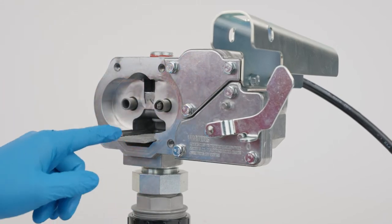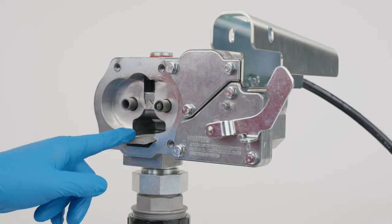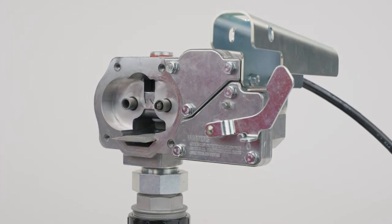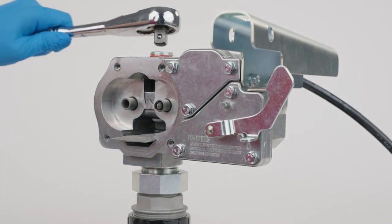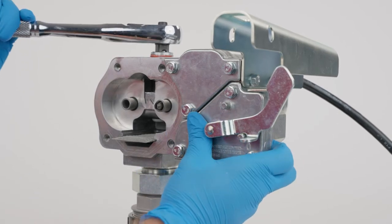Leave the strainer in place to prevent small parts from dropping into the strainer cavity. Using a half-inch drive socket wrench, remove the pipe plug from the top outlet port.